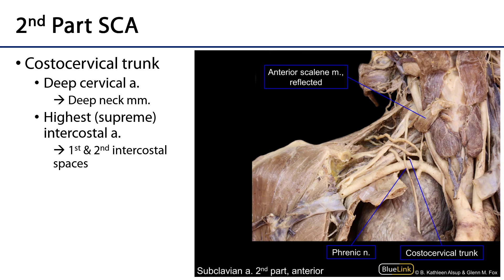With the anterior scalene reflected, we can see the costocervical trunk — 'costo' meaning rib, 'cervical' meaning neck. It has two branches: the deep cervical artery, which serves the deep neck muscles, and the highest (supreme) intercostal artery, which gives rise to the anterior first and second intercostal arteries serving the spaces between the first, second, and third ribs.